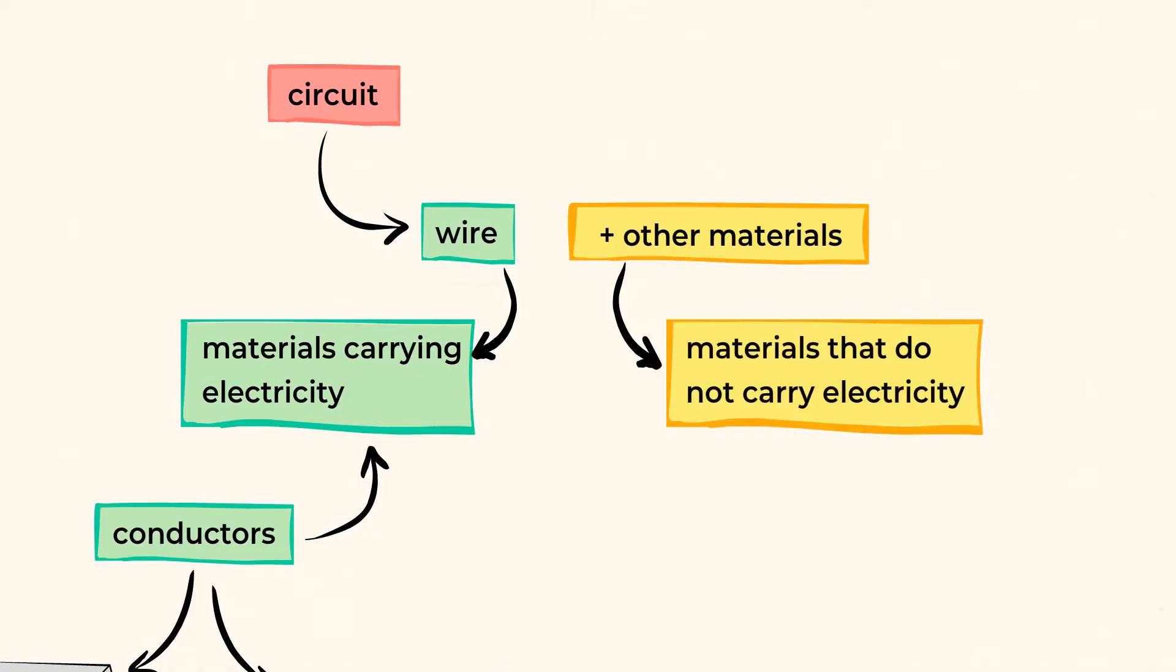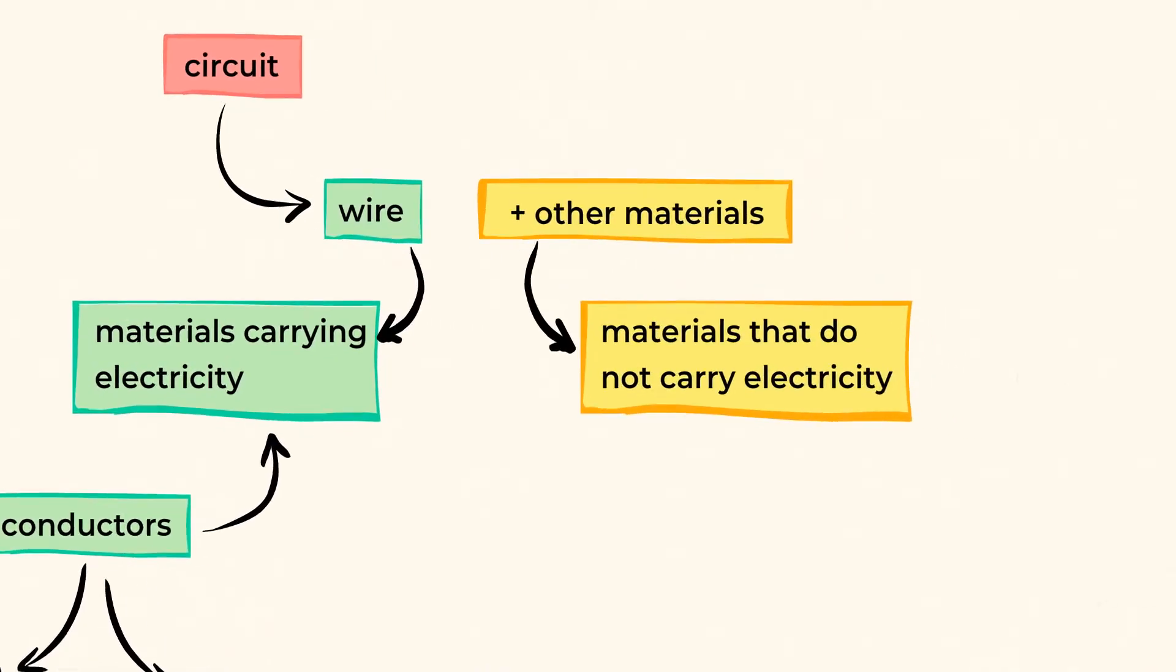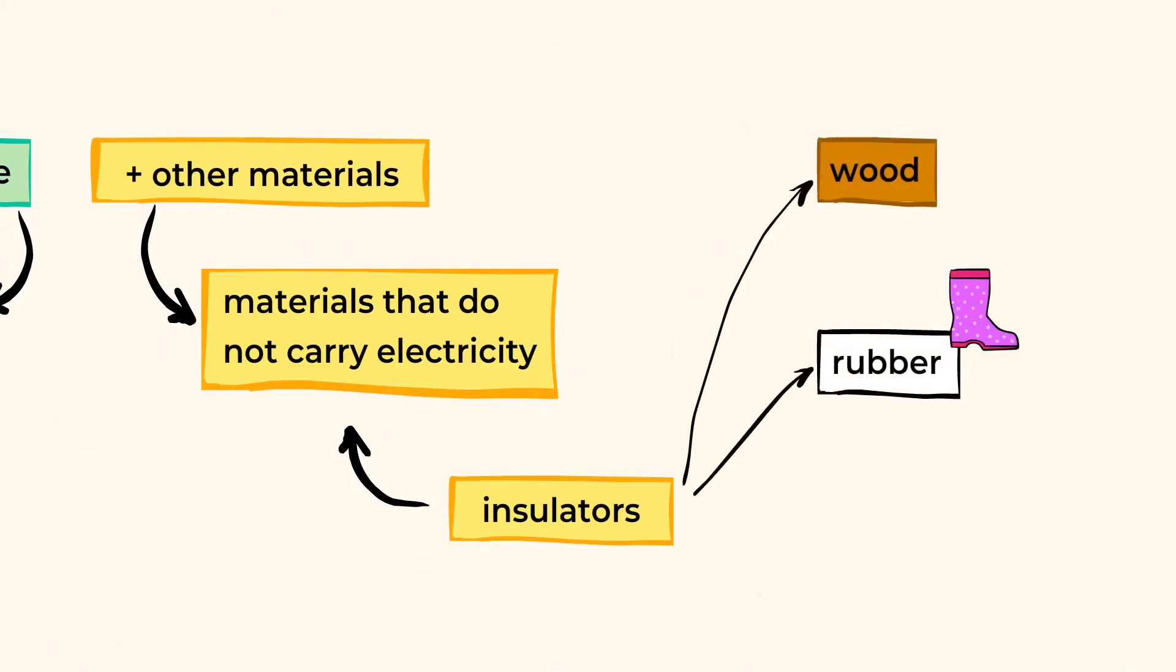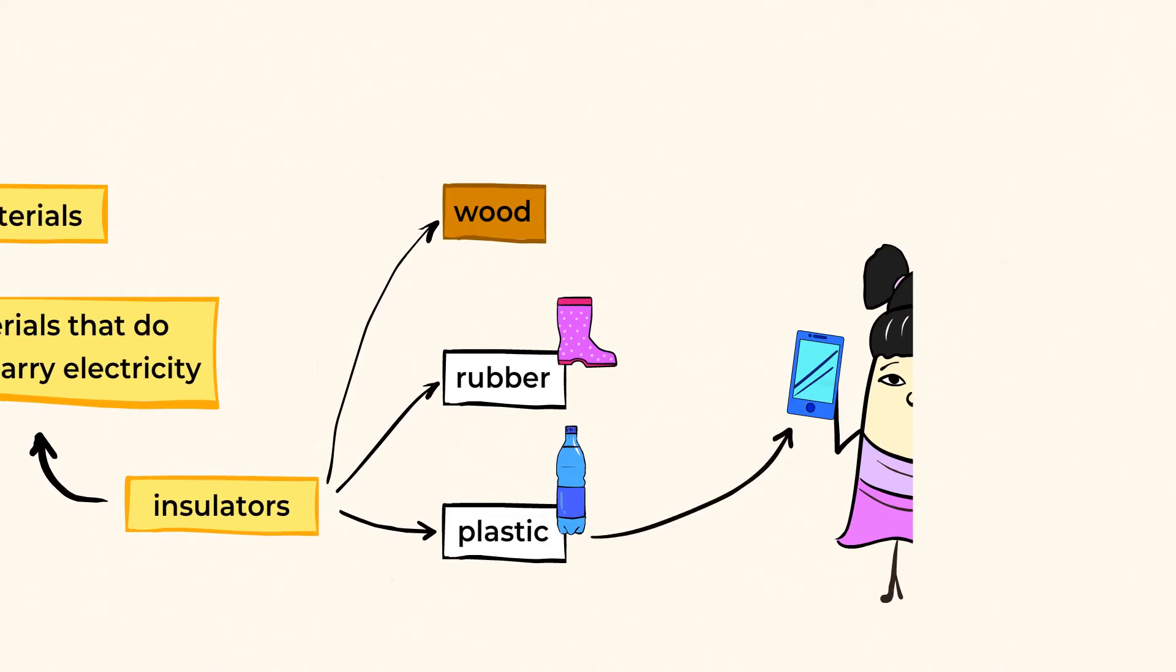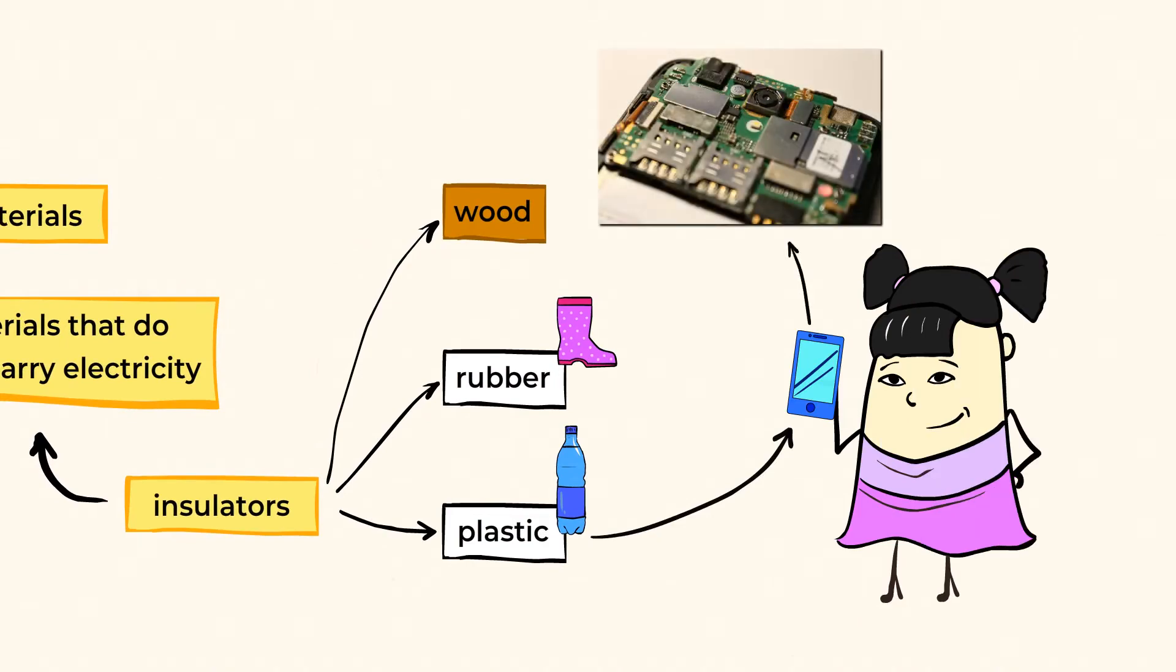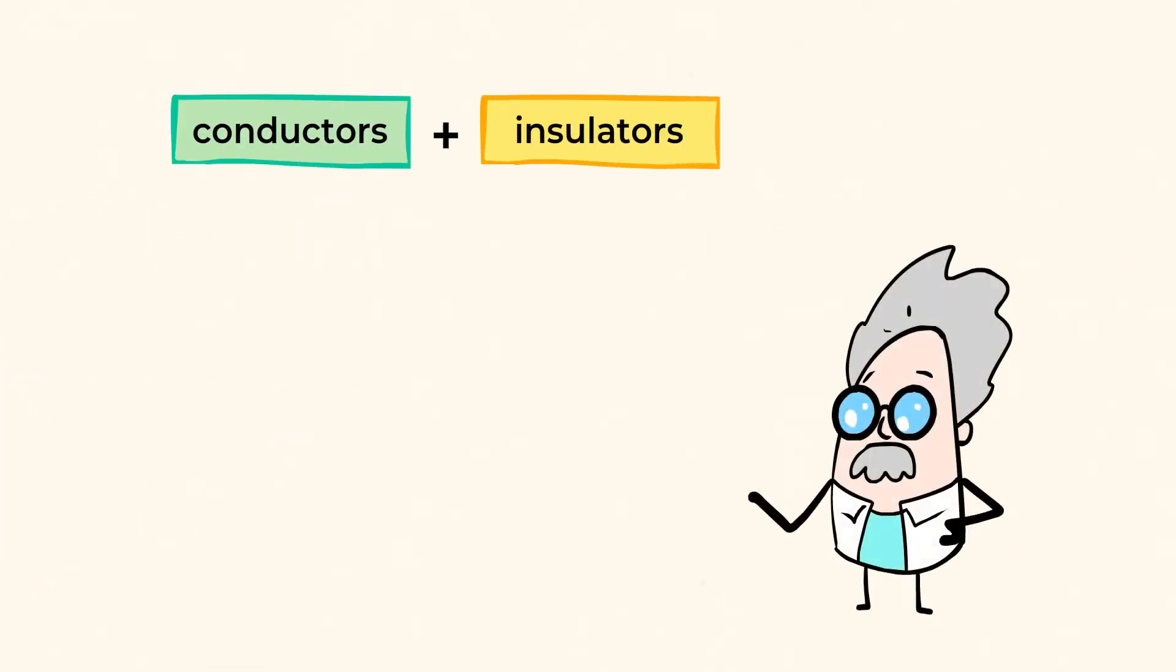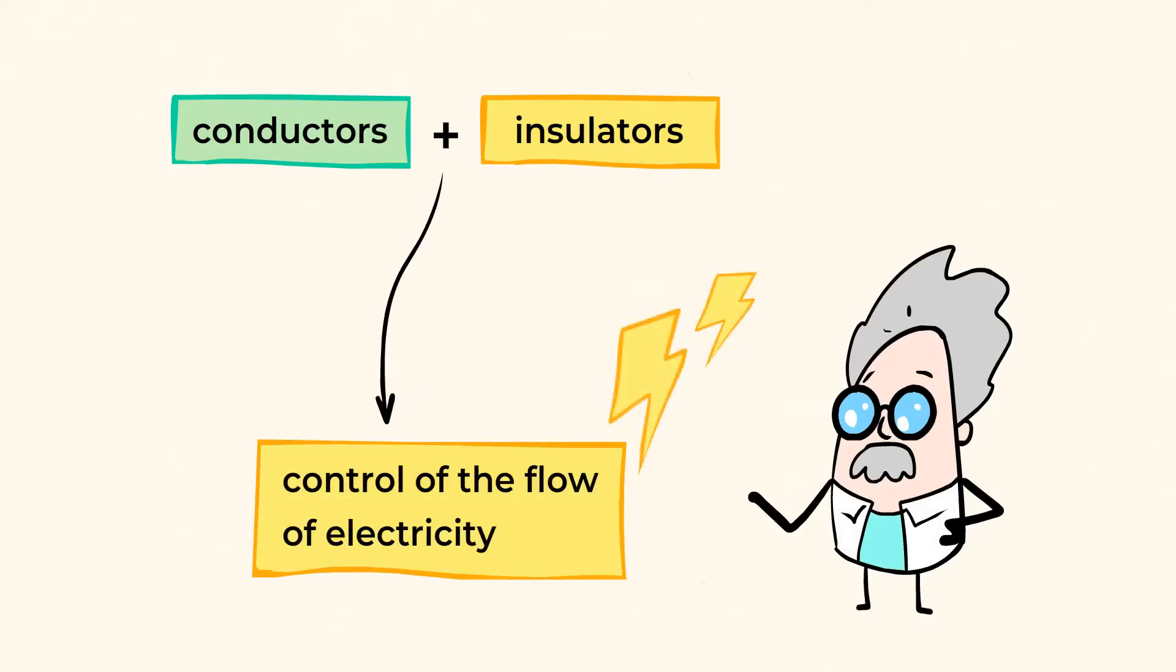Now, materials that don't carry electricity are called insulators. Wood, rubber, or plastic are good insulators. That's why wires in our electronic devices are usually wrapped in a plastic coating, to prevent the electricity from traveling outside the wire. Different combinations of conductors and insulators can be used to control the flow of electricity.